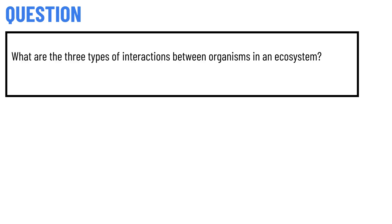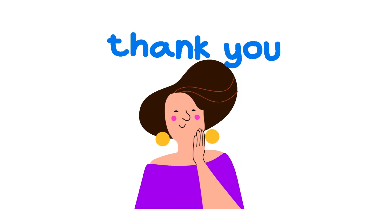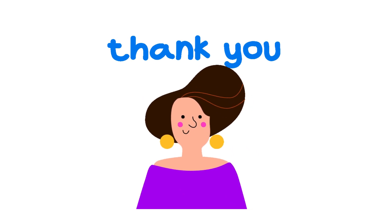Our today's question is: what are the three types of interactions between organisms in an ecosystem? The correct answer is competition, predation, and symbiosis. That's the correct answer of the question.